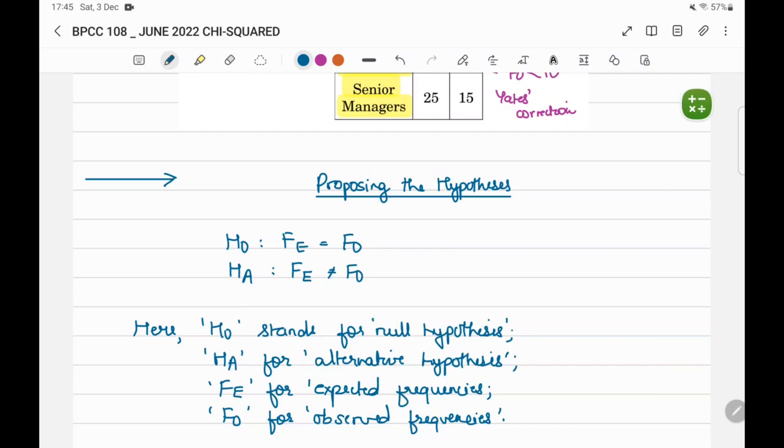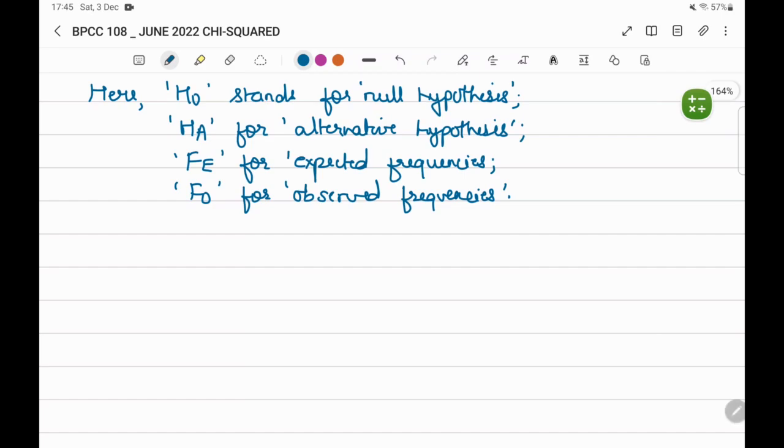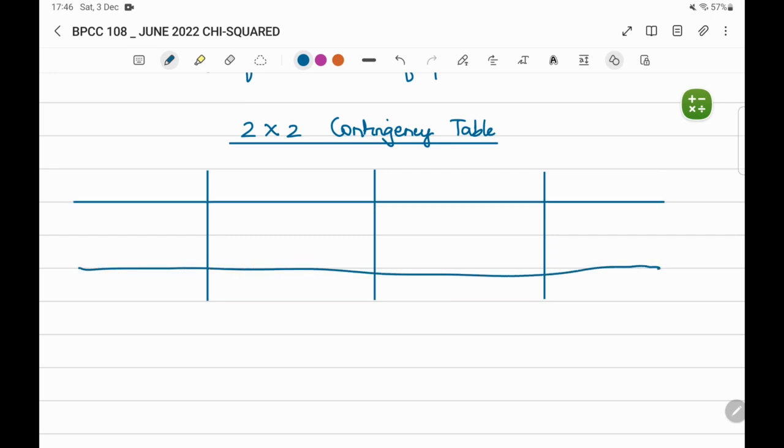Here, H0 stands for null hypothesis. HA for alternative hypothesis. FE for expected frequencies. FO for observed frequencies. With this, we complete our first step. The next step for a two-by-two contingency sum would be to prepare the two-by-two contingency table.